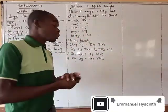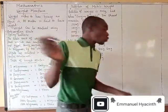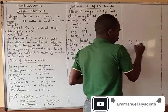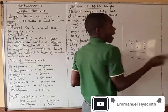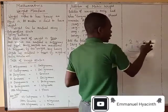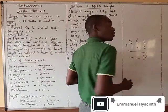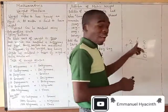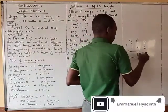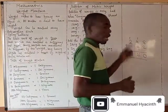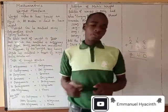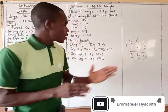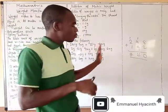Now, I need you to pay attention. We know very well that if they ask us to add normally — normal addition — for example, add 248 plus 192. Normal addition: 8 plus 2 is 10, write 0 carry 1. 4 plus 9 plus 1 is 14, write 4 carry 1. 2 plus 1 is 3, plus 1 is 4. That is 440. It is the same way you add normal addition that you add your weight.